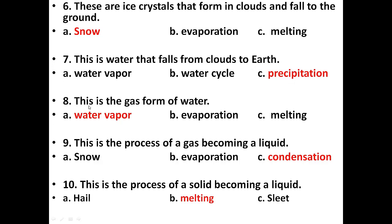Next: This is the gas form of water. Options are water vapor, evaporation, melting. The answer is A, water vapor. Water vapor is the gas form of water — when water is heated up, it evaporates in the form of water vapor. The gas form of water is water vapor.